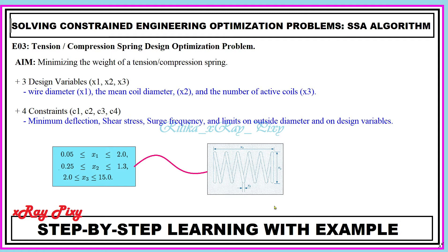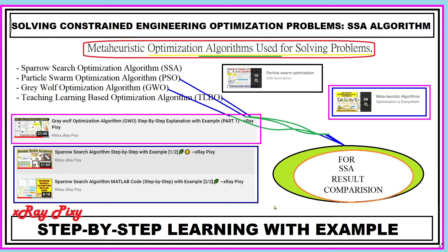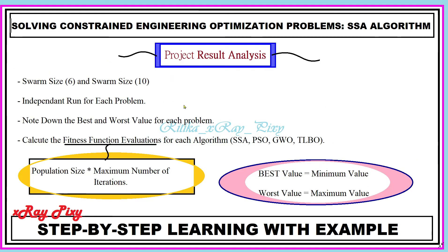If all the constraints are satisfied, we consider the solution feasible; otherwise infeasible. For the comparison, we used Particle Swarm Optimization (PSO), Grey Wolf Optimizer (GWO), and Teaching Learning Based Optimization (TLBO). As discussed, we are handling constraints directly without parameter optimization, so each run may yield feasible or infeasible solutions.